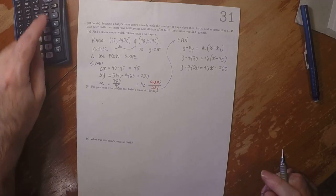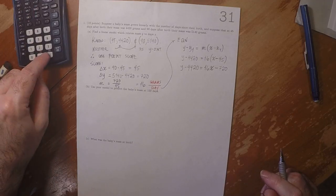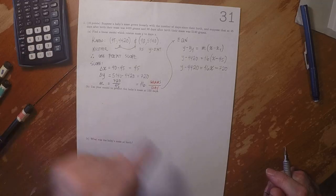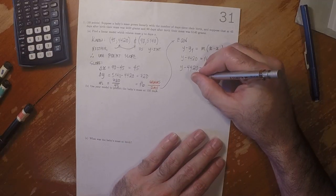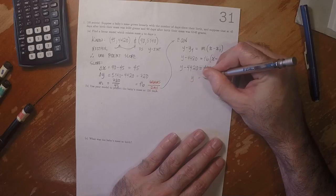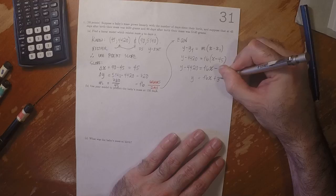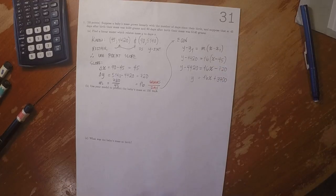And then add 4420 to both sides. 3700. So y equals 16x plus 3700.